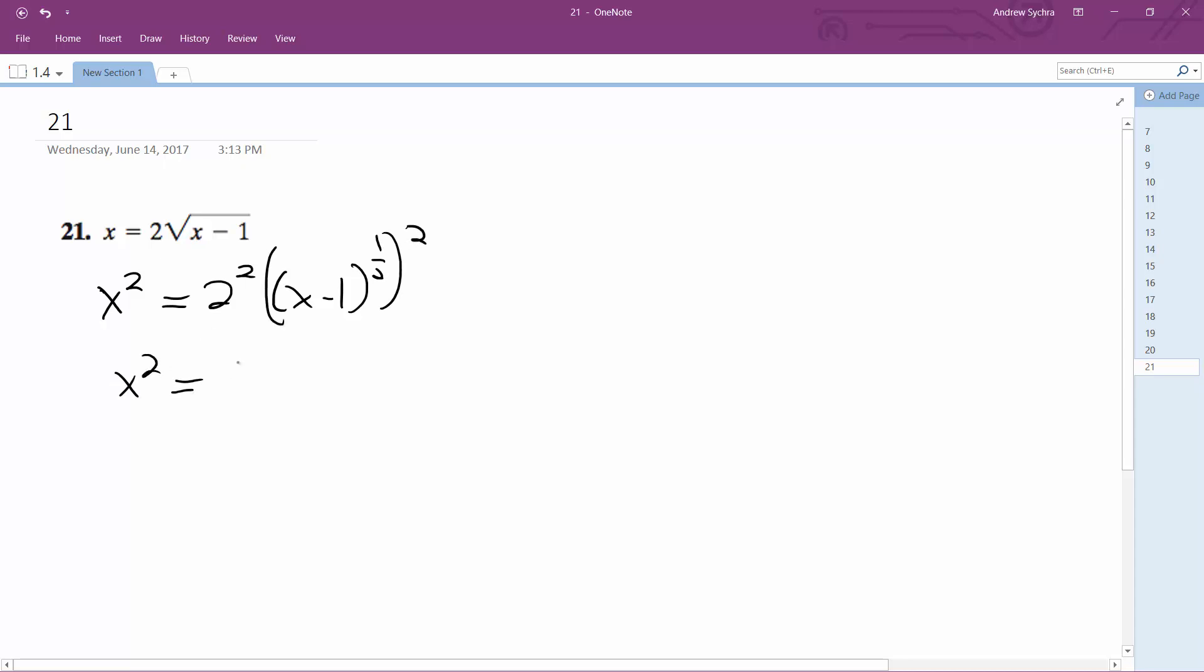So we're left with x squared is equal to 4 times x minus 1. So x squared is equal to 4x minus 4. We move everything to the left side, so we get x squared minus 4x plus 4 equals 0.